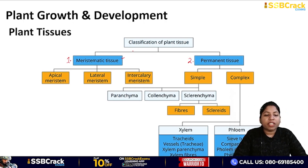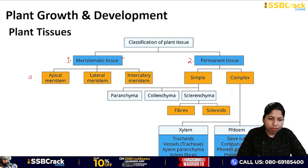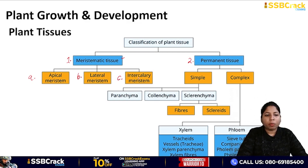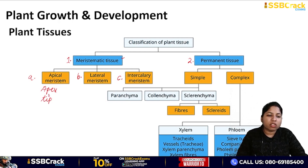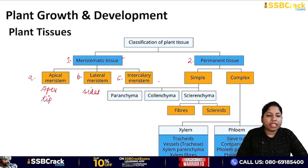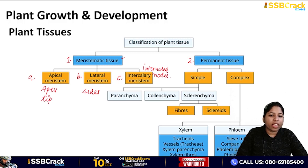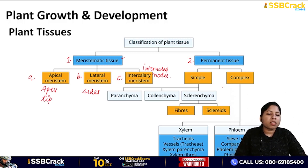Based on the different locations where meristematic tissue is present, it is of three types: first is apical, second is lateral, and third is intercalary meristem. Apical meristem is present at the apex — at the tip — like at the root tip and shoot tip. Lateral meristem is present on the sides. Intercalary meristem is present on the inter-nodes and helps in inter-node elongation.